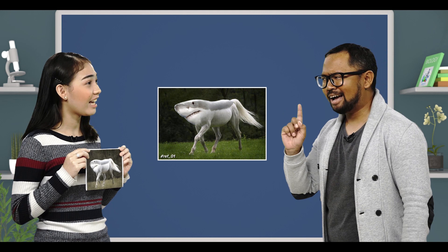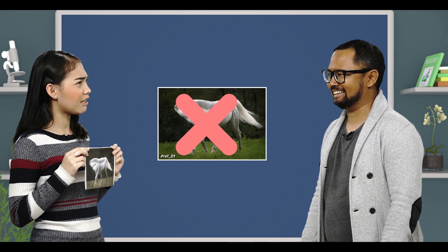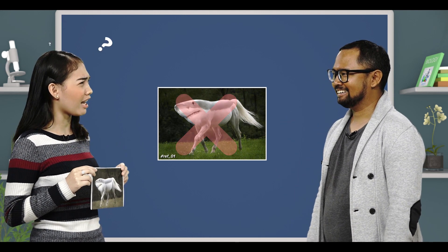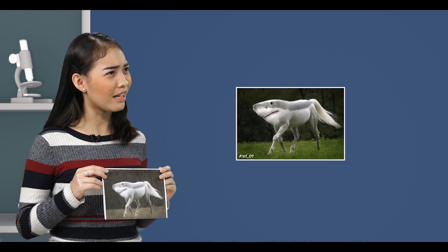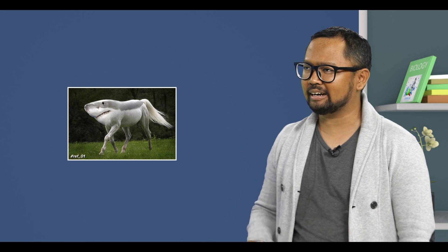That will not happen in reality. But why? Well, the genetic makeup of the horse and the shark is totally different. You would have to mutate every genetic code of a horse into a shark. And that's not possible.